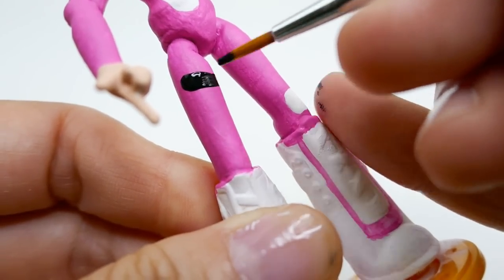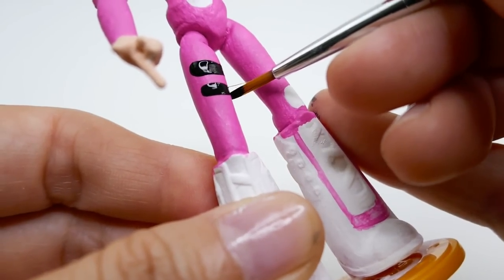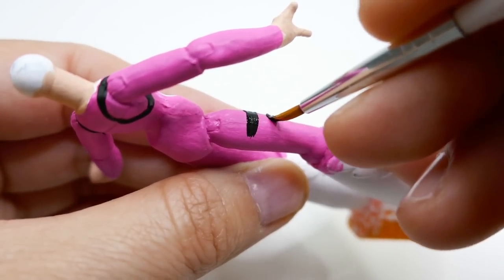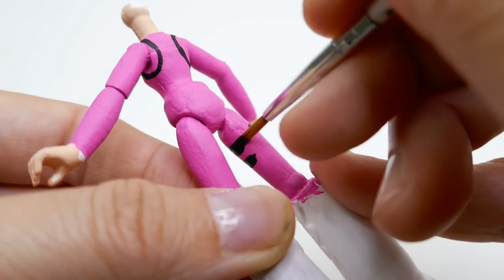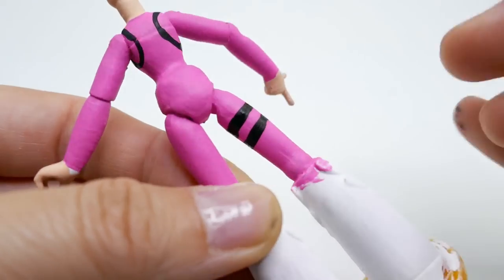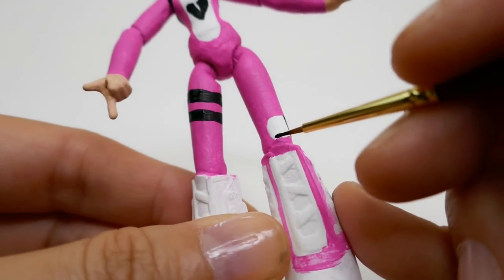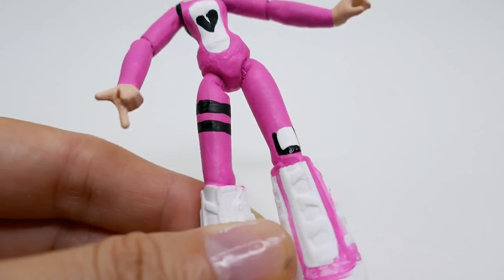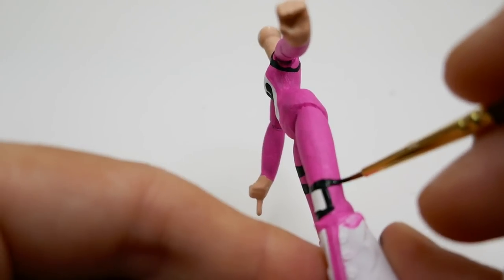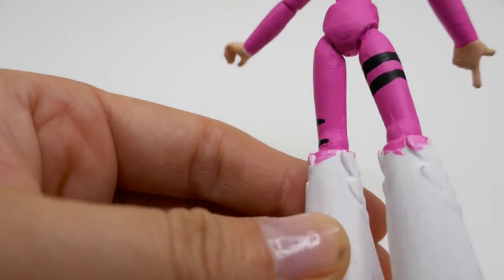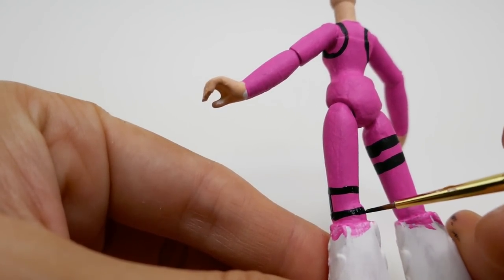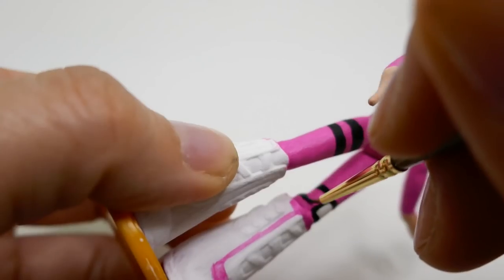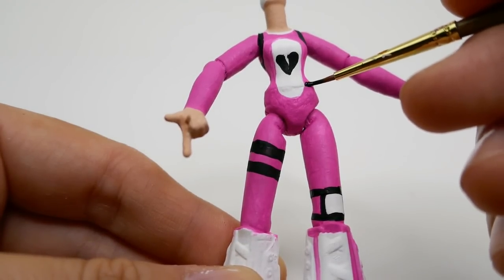We're also going to paint some black stripes around her legs and around her knee pads. Here we're going to add a black belt.